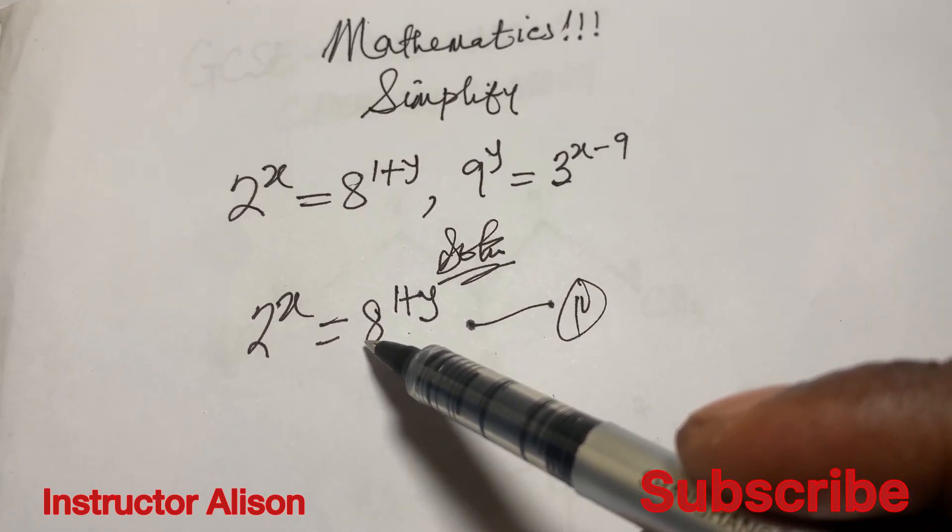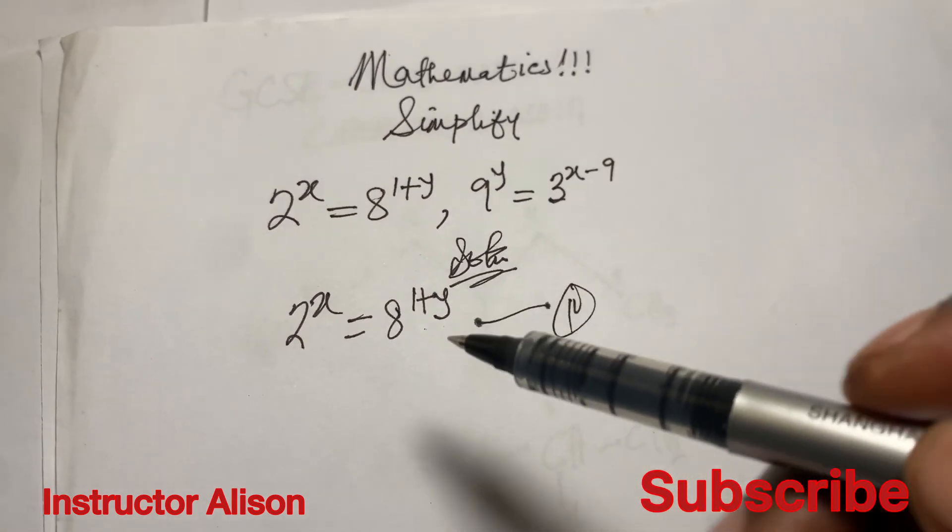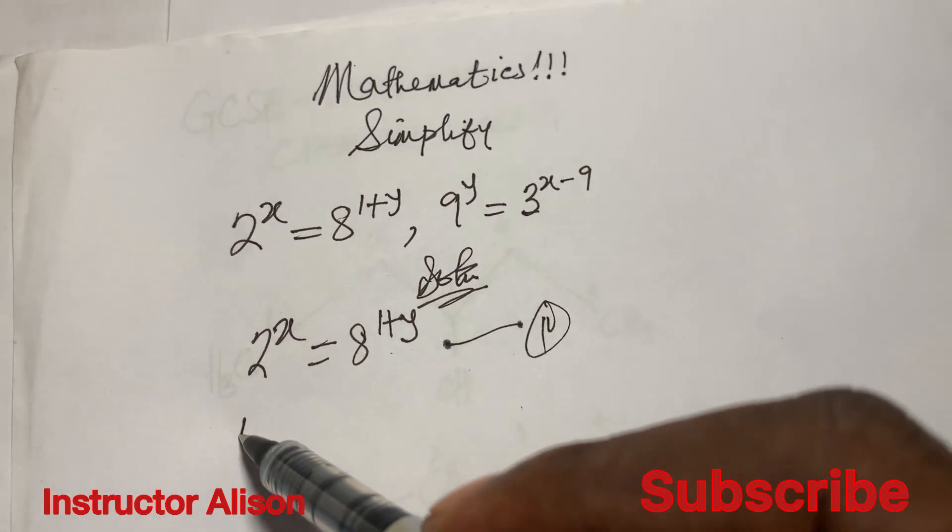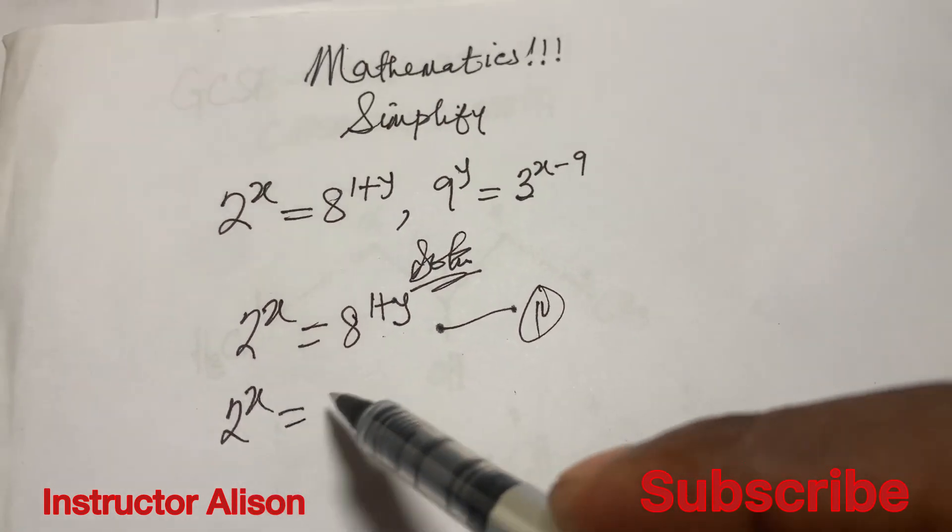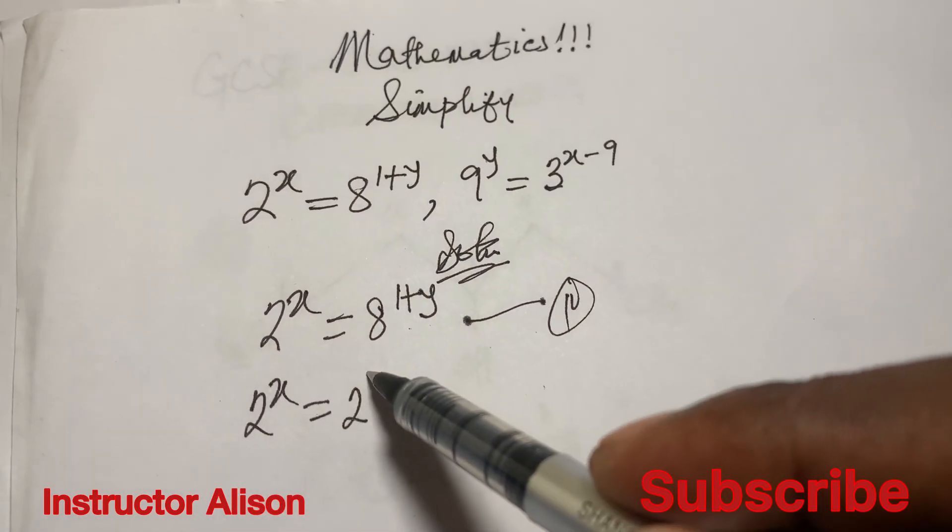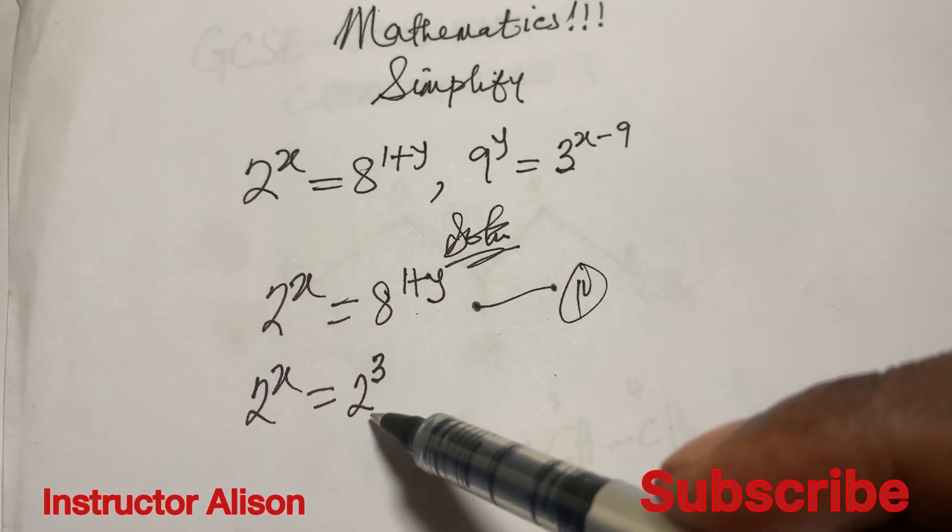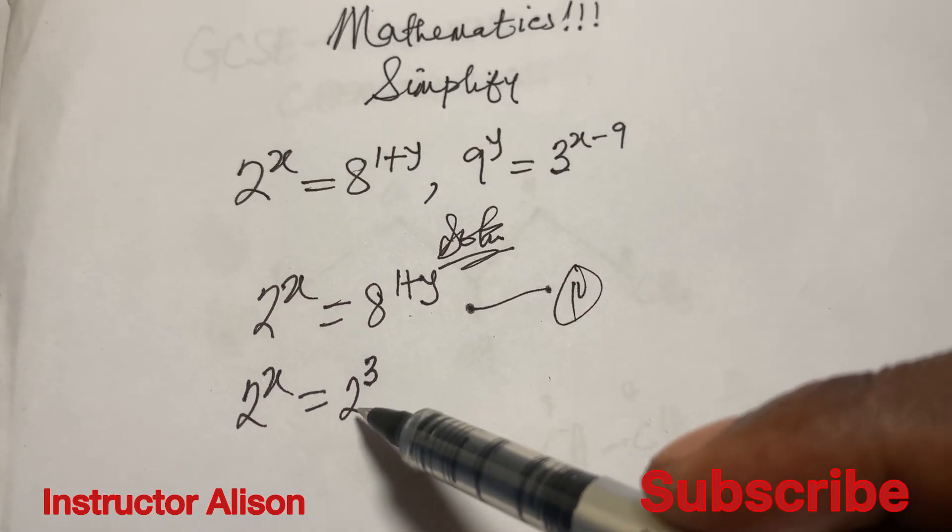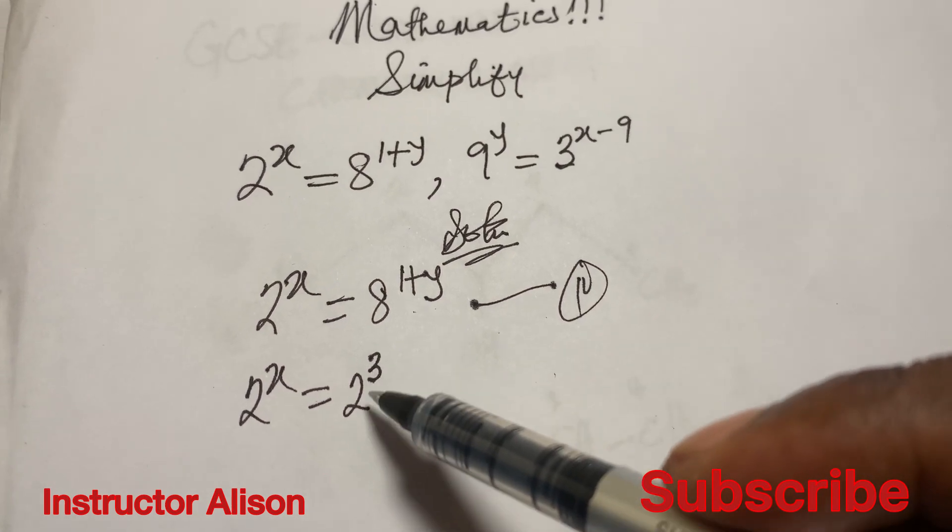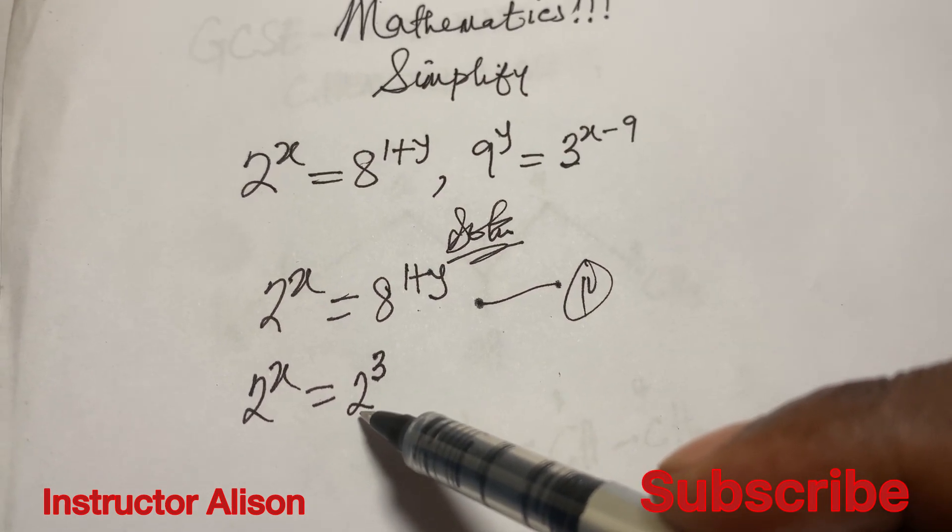How can we reduce this? We want to reduce it in such a way that you have common base with what we have at the left hand side of the equation. So this will become 2^x equal to, of course we know that 2 to the third power will be 8.